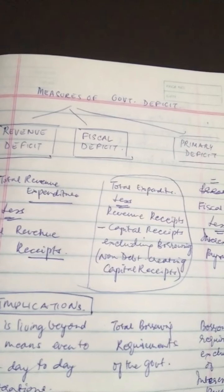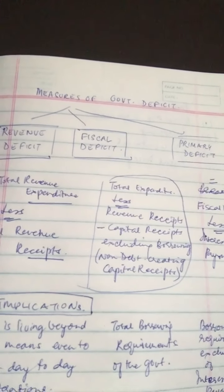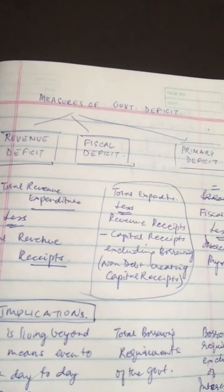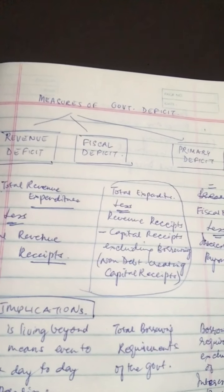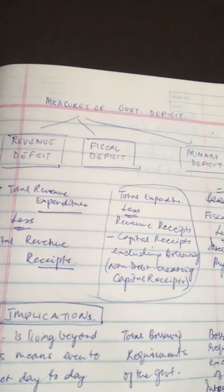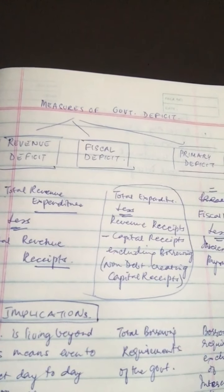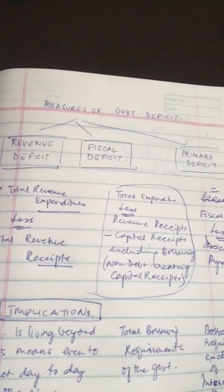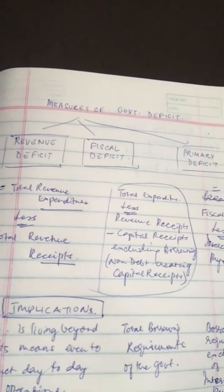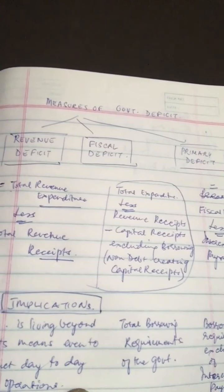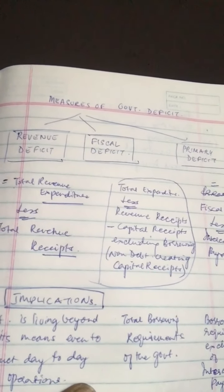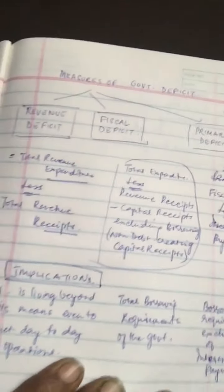Number one is monetary expansion. The deficit may be financed by borrowing from the country's central bank. The government issues treasury bills to the central bank, and the central bank buys these treasury bills from the government in return for cash, which is created by the bank by printing new currency notes. This is called deficit financing — the government uses this money to fund its deficit.